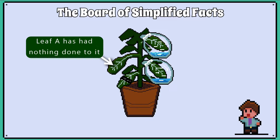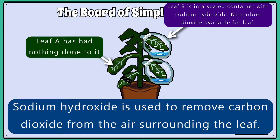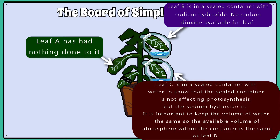Leaf A has had nothing done to it. Leaf B is in a sealed glass vessel which contains 30 centimetre cubed of sodium hydroxide solution. You need to know that sodium hydroxide absorbs carbon dioxide, so this leaf will have no access to carbon dioxide. Leaf C will also be in a sealed glass container, but this one will contain 30 centimetre cubed of water. This acts like a control experiment to show that leaf B and C have access to the same volume of atmosphere, and it should prove that the sodium hydroxide is removing the carbon dioxide from the atmosphere, and that the sealed container on its own is not affecting the leaf.